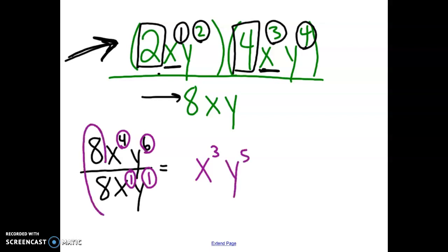Now what do we do with these numbers in the front? The same thing we would normally do. Divide them. 8 divided by 8 is 1. And you don't need to put the 1. So our answer is x to the third, y to the fifth.